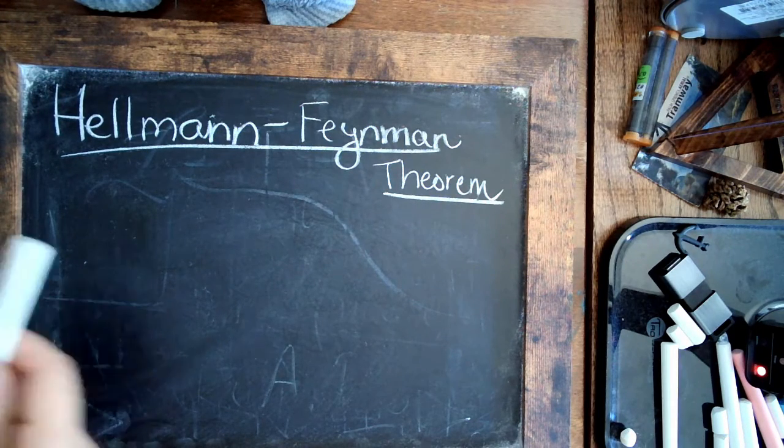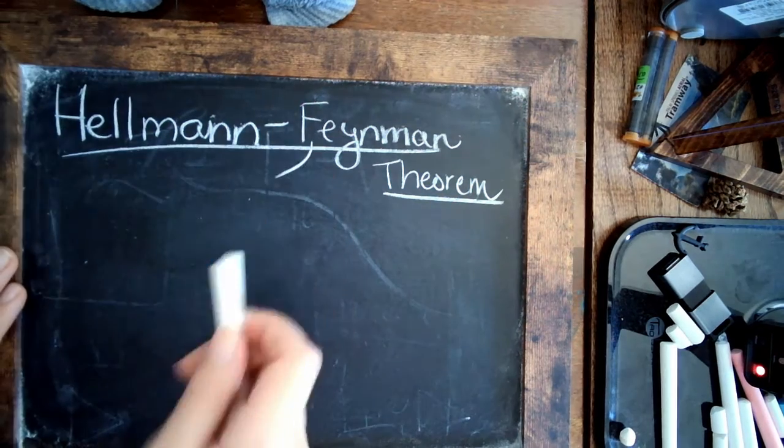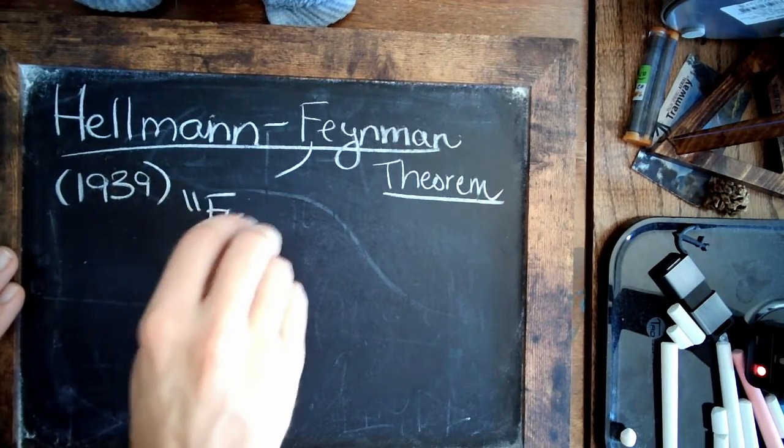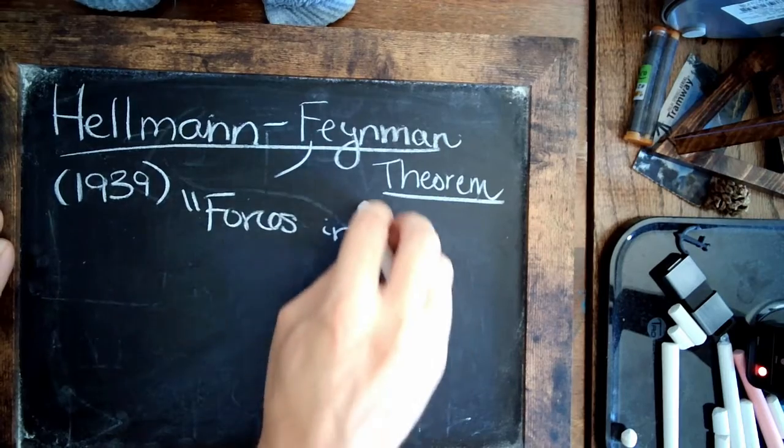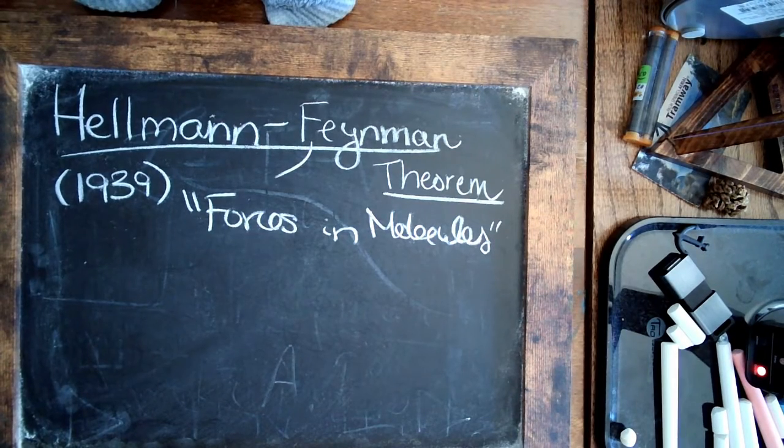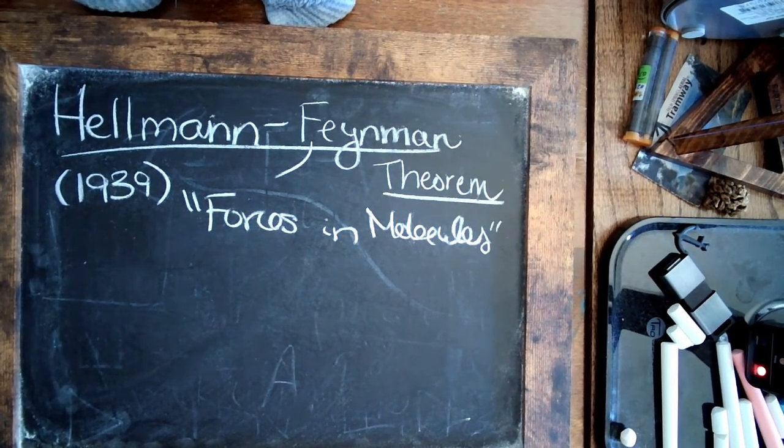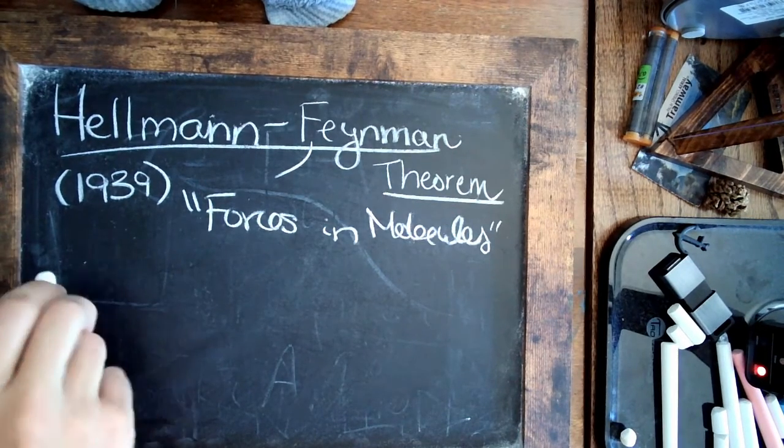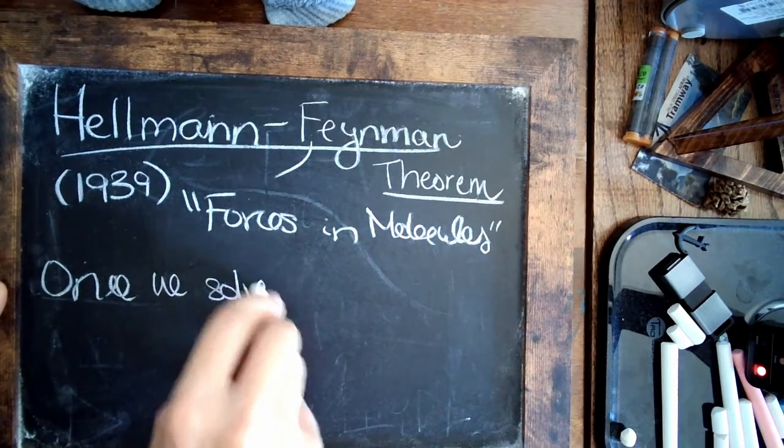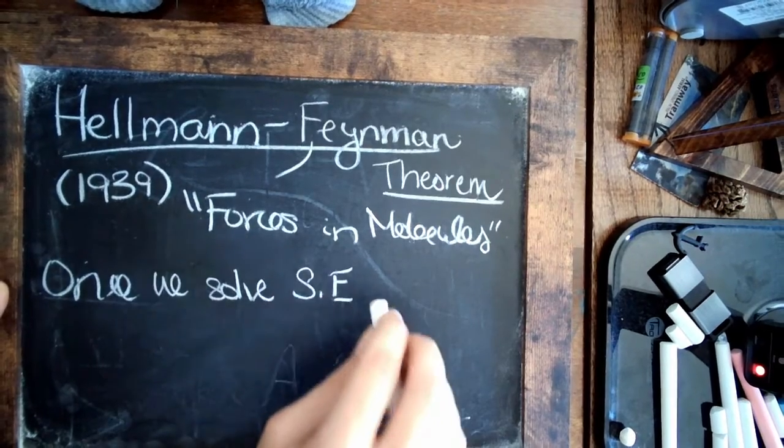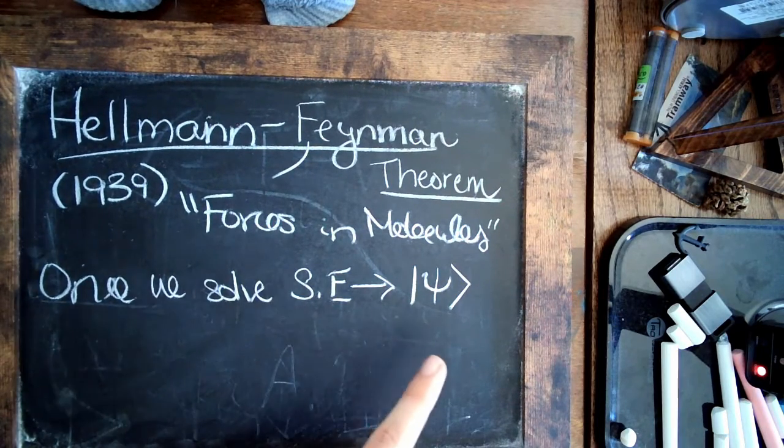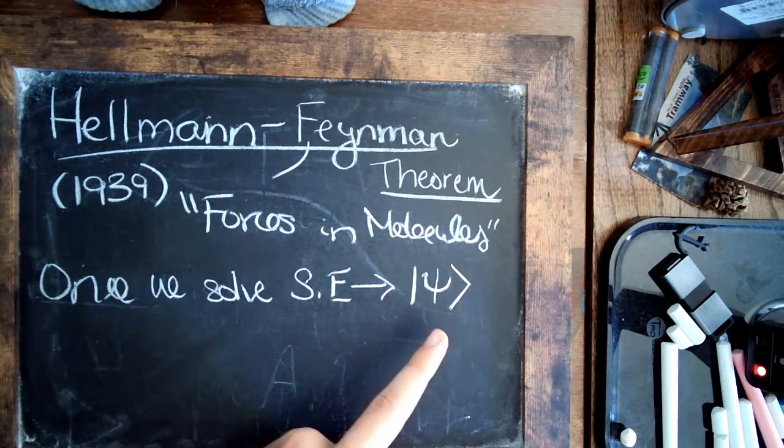Now the theorem is known as the Hellmann-Feynman theorem. Feynman wrote about it in 1939 in a lovely paper called Forces in Molecules, which you can look up. But the basic premise that this theorem states is that once you've solved the Schrödinger equation, which gives us these eigenstates. Now these give us the spatial distributions of the electrons, or the electron clouds, if you will.